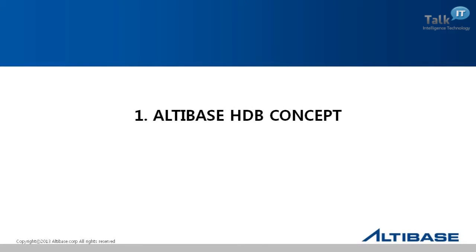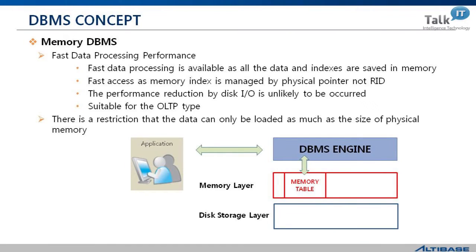Chapter one: Altibase HDB concept. In in-memory DBMS, the high performance of data processing is guaranteed as every single piece of data is stored in memory and also processed by memory. Fast data processing is available as all data indexes are saved in memory. Fast access is also guaranteed as the memory index is managed by physical pointer, not by row ID.